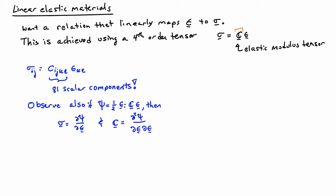Now, observe also that if I consider the free energy function to be one-half c epsilon c, in other words, it's quadratic, then when I take its derivative with respect to epsilon, I'm going to get the linear relationship that I'm looking for. The derivative of a quadratic function is linear. Psi equals one-half epsilon double contracted with c epsilon here. When I take its derivative, it's going to produce exactly this relationship up here. Note also that if I take the second derivative of psi with respect to epsilon, I'm going to recover the fourth-order tensor of c.